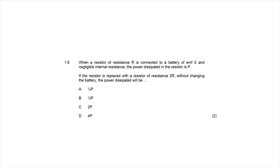Question 1.8: a resistor R connected to a battery of EMF ε (negligible internal resistance) dissipates power P. If the resistor is replaced by 2R without changing the battery, what is the new power? The correct formula to use is P = V²/R, not P = I²R, because when resistance changes, current changes too. Since the battery is unchanged, voltage V remains constant.